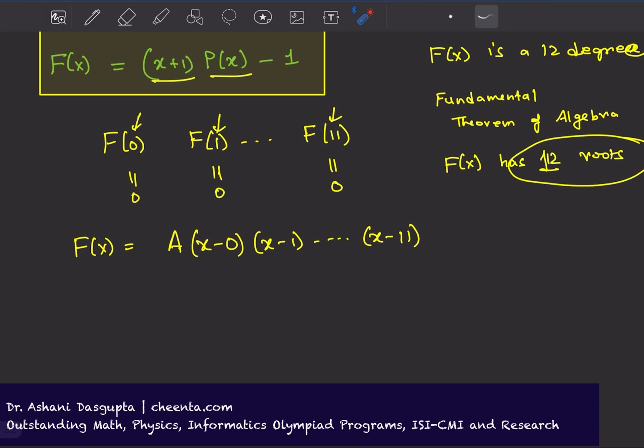Let's calculate F(-1). F(-1) is (-1+1)P(-1) - 1, which turns out to be 0 minus 1, just minus 1.